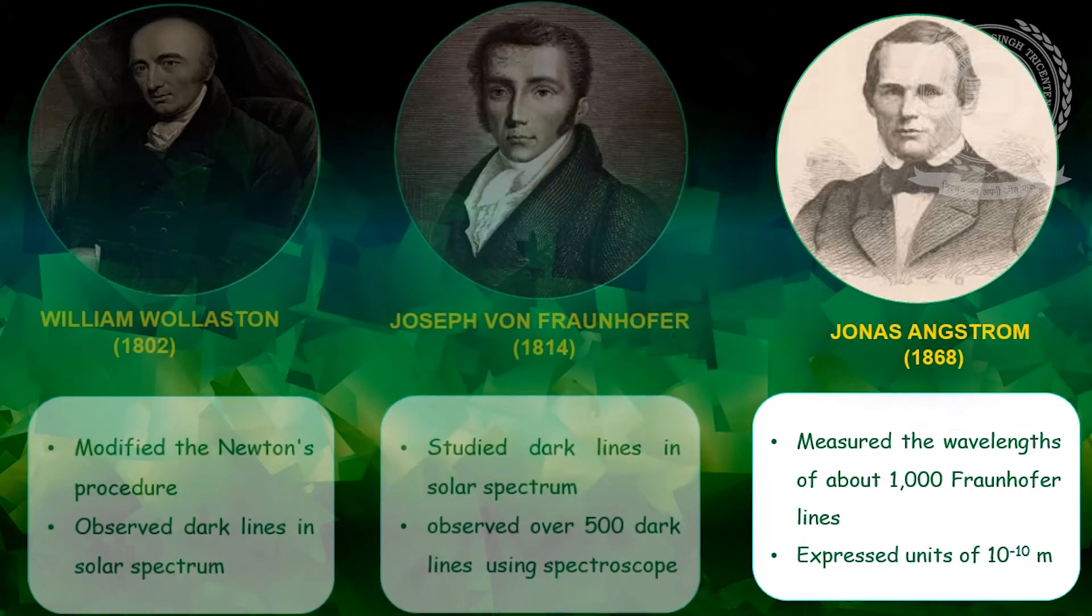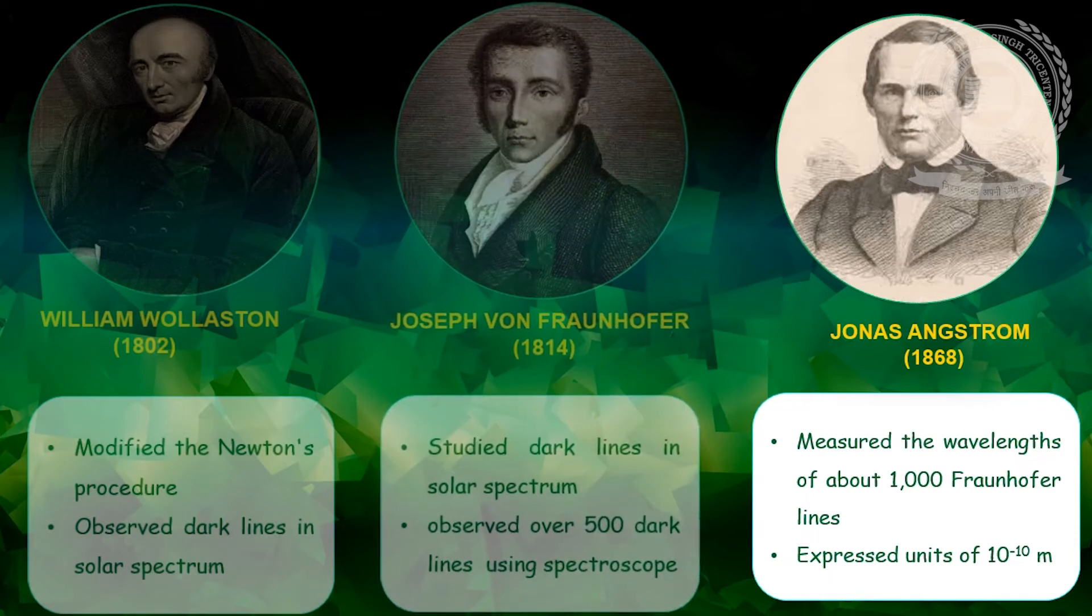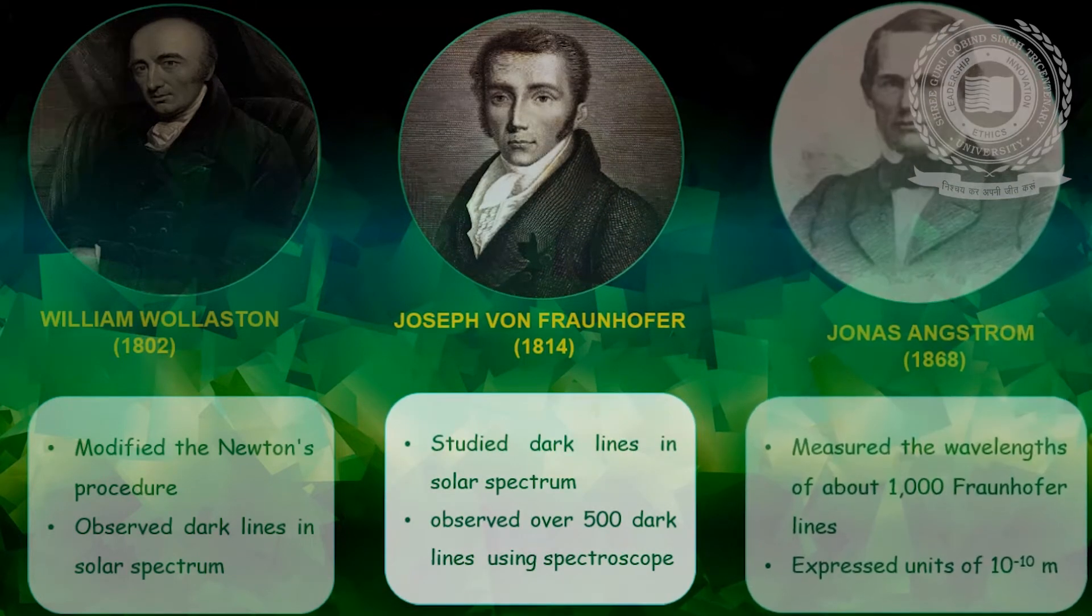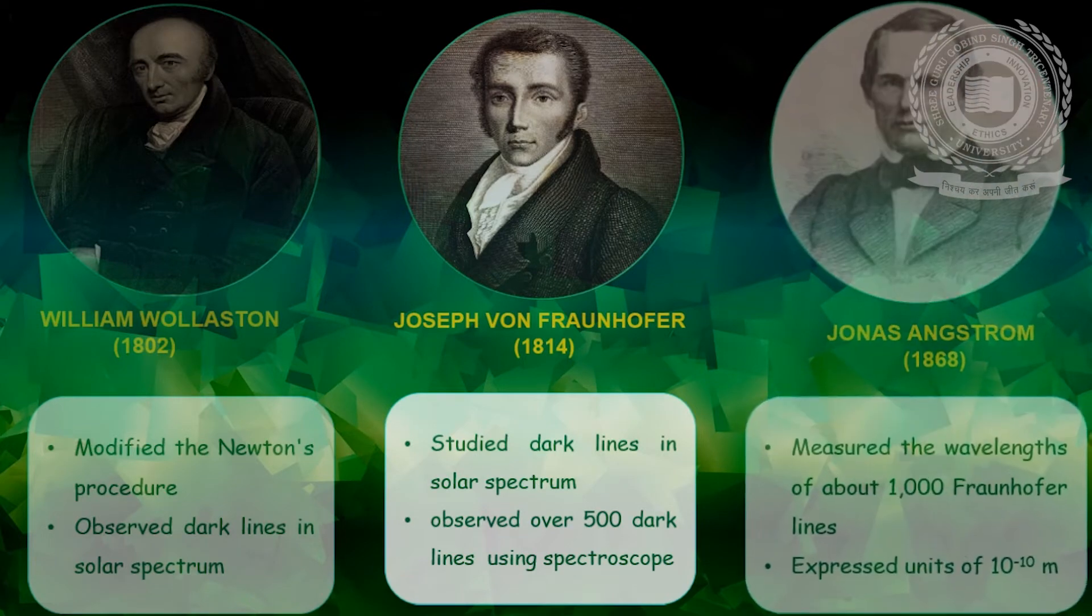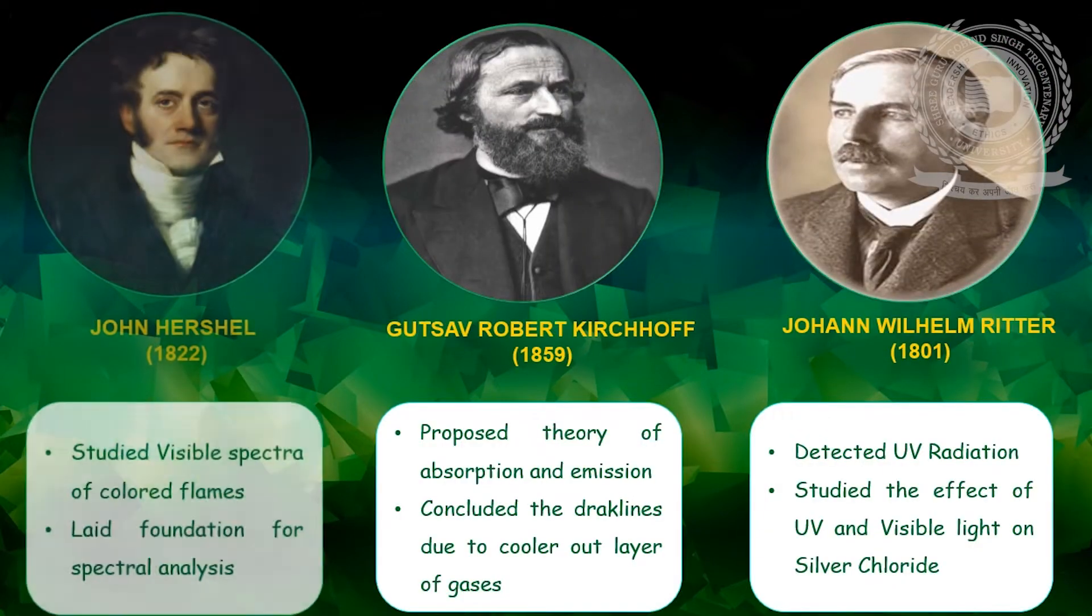In 1814, a German optician, Joseph von Fraunhofer studied the dark lines and observed over 500 dark lines in the solar spectrum. In 1868, Anders Jonas Angstrom measured the wavelengths of about 1000 Fraunhofer lines in solar spectrum and expressed them in units of 10 power minus 10 meter. In 1822, the British astronomer Sir John Herschel studied the visible spectra of coloured flames which laid the foundation for spectral analysis, which would be further developed 40 years later by Kirchhoff and Bunsen.